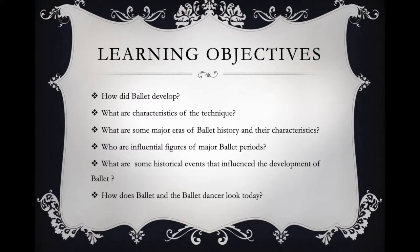Our learning objectives for this module include: how did ballet develop, what are characteristics of the technique, what are some major eras in ballet history and their characteristics, who are influential figures of these ballet periods, what are some historical events that influenced the development of ballet, and how does ballet and the ballet dancer look today.